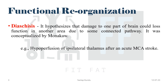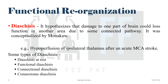There are different types of diaschisis. The first is diaschisis at rest — the classic von Monaco type, such as ipsilateral thalamic hypoperfusion in MCA stroke, as already described. The second is functional diaschisis, which occurs when an area of diaschisis is found only when another part of the brain is activated.